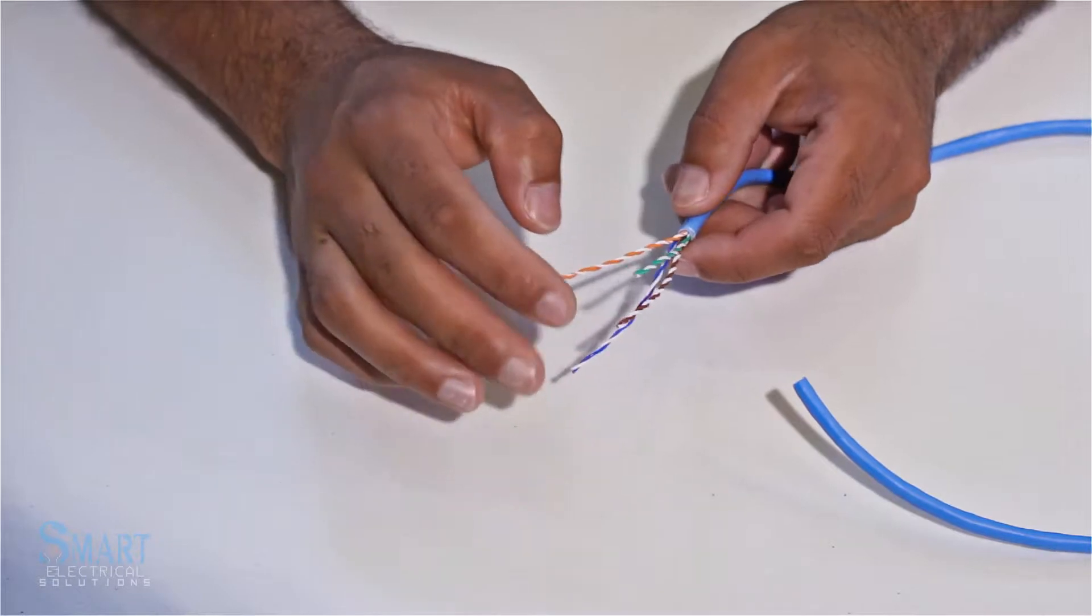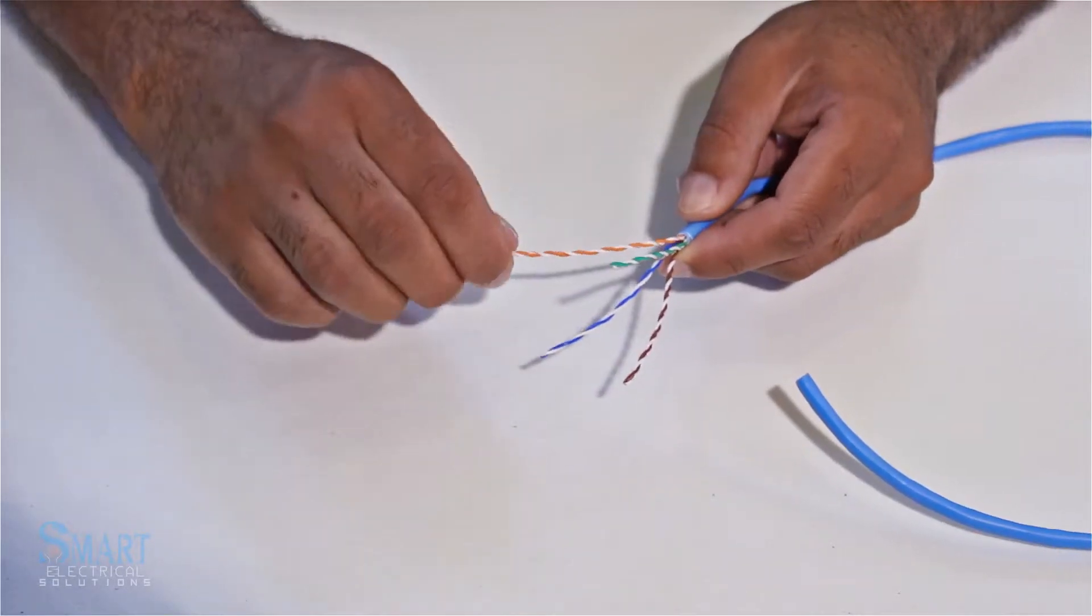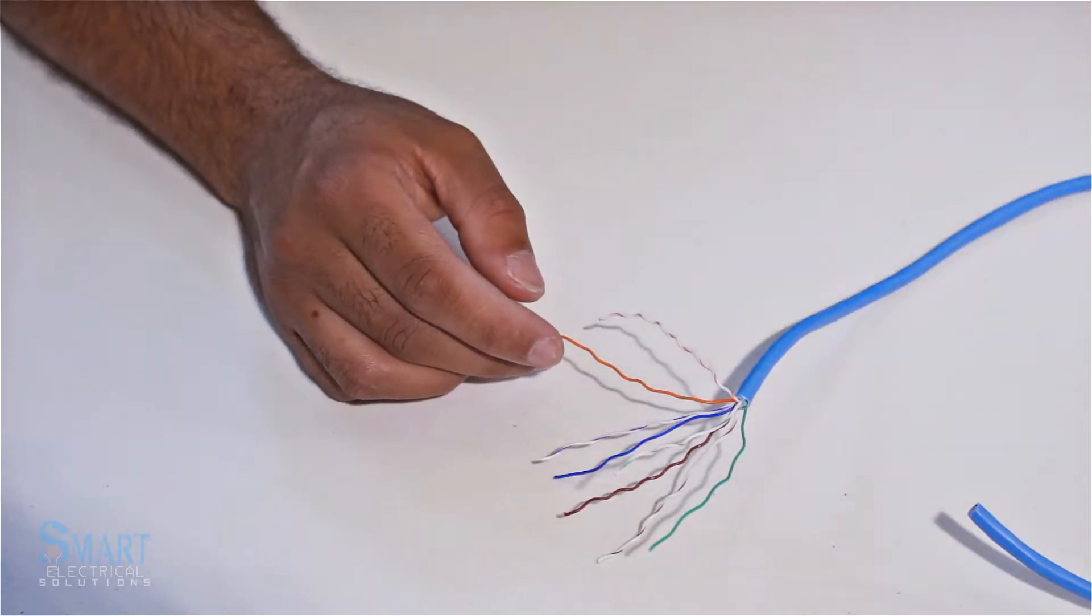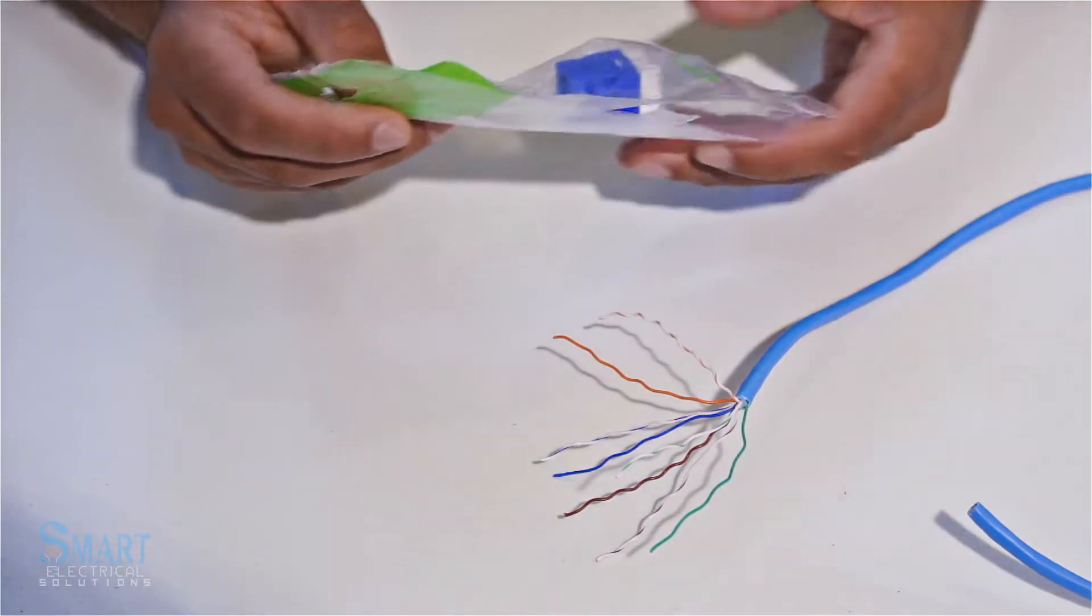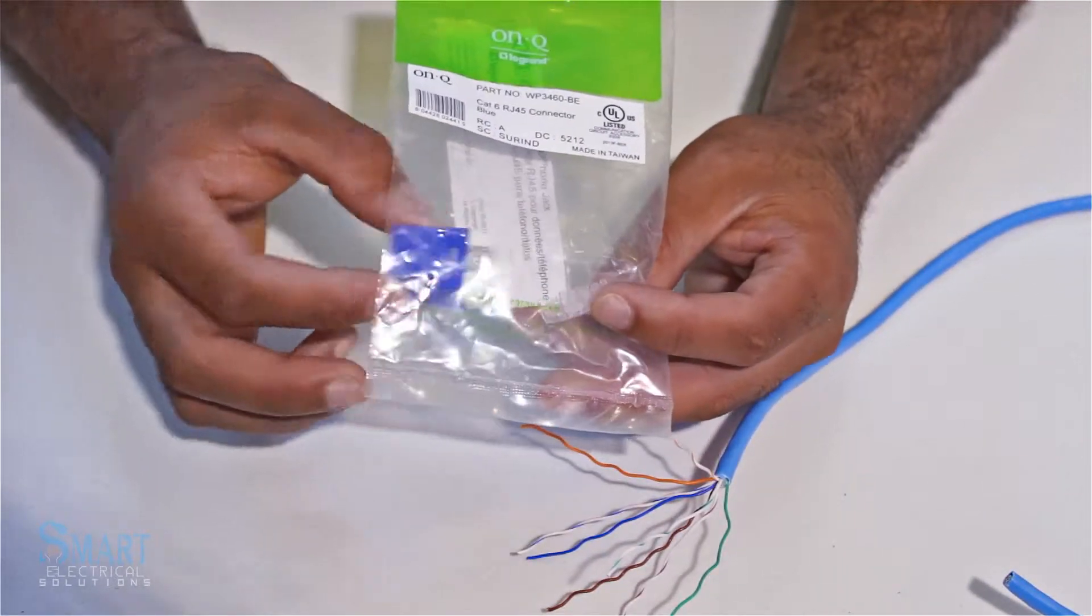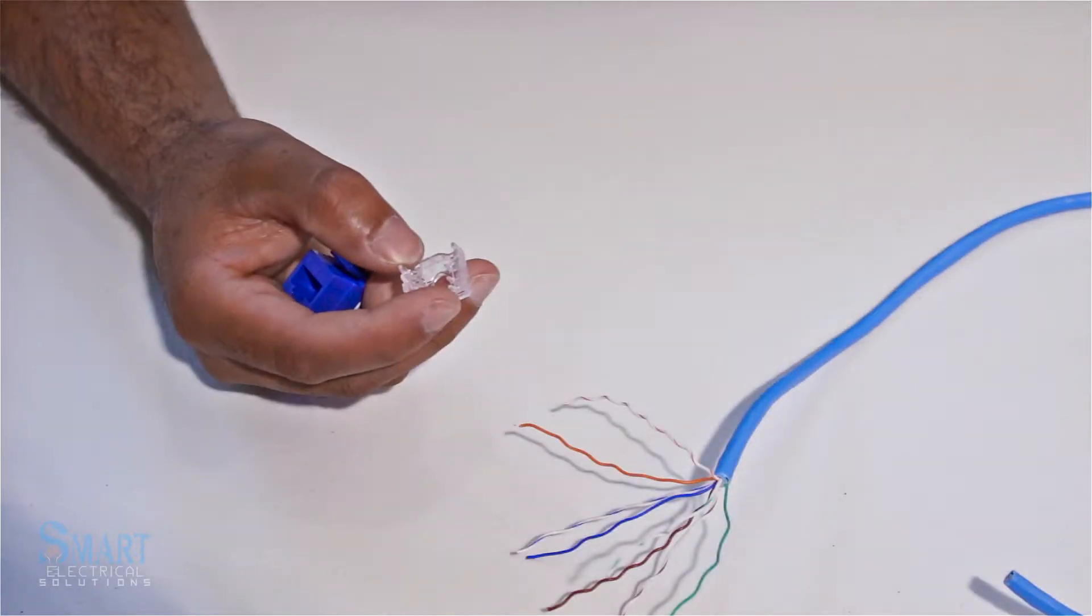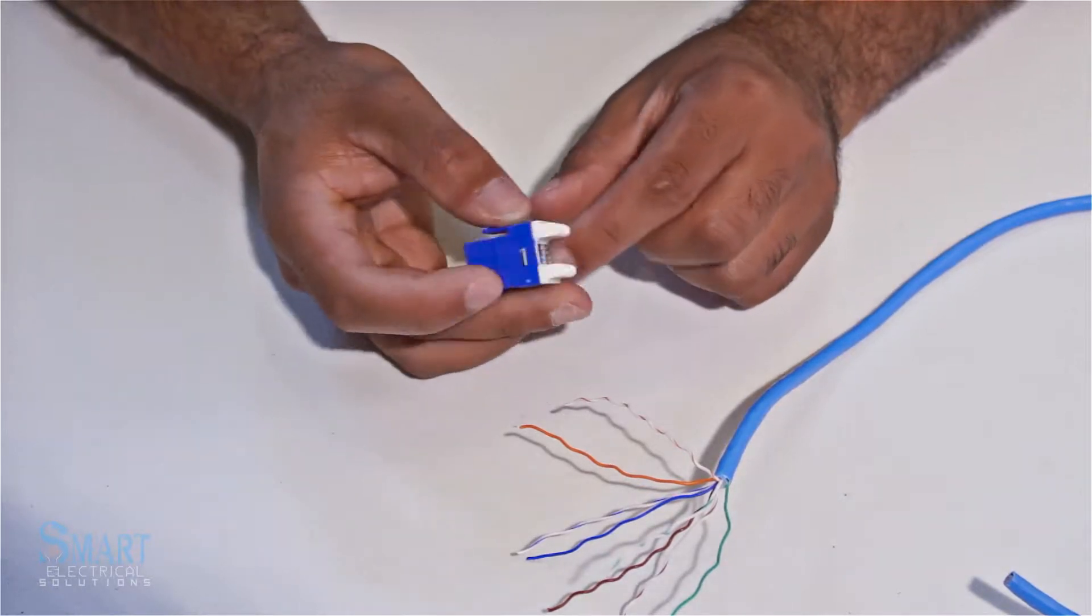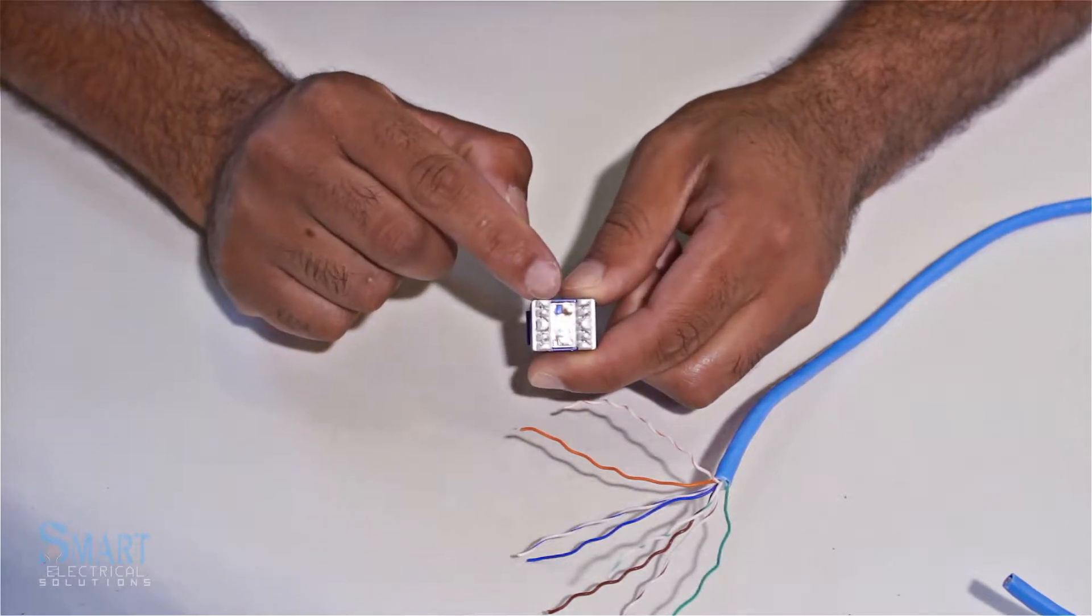The next step is to get our RJ45 connector, one of these guys. We're going to have everything in the notes, all the information you need to buy these. Right here in the back they have the letter A and B. These are the ways to connect them.